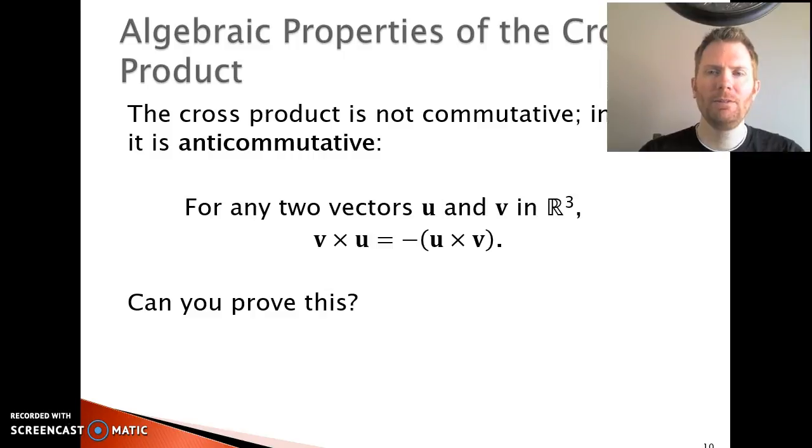A few other properties. I mentioned this earlier. The cross product is not commutative. U cross v does not equal v cross u. In fact, the term for it is that it's anti-commutative. So you can see for any two vectors u and v in R3, v cross u is the negative of u cross v. So it goes in the exact opposite direction. It's also very easy to prove. If you just multiply both of them out, you'll see that they're the same thing.